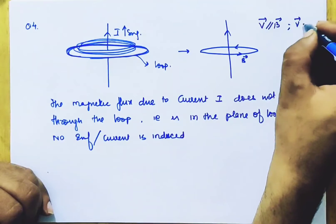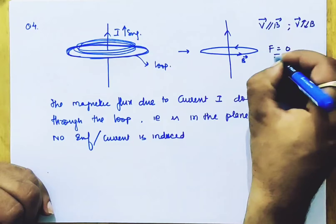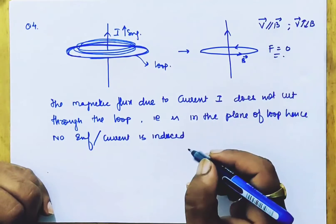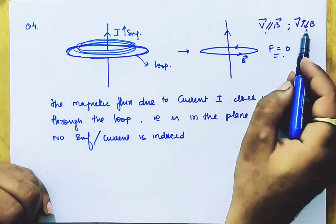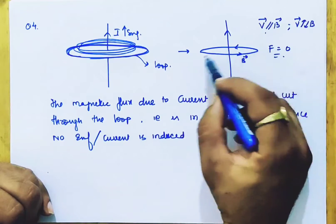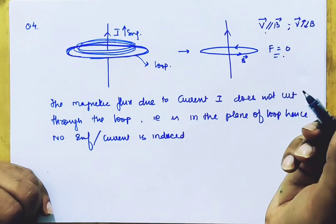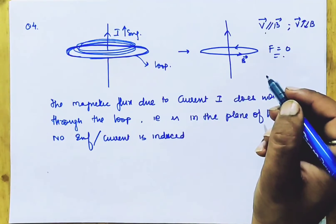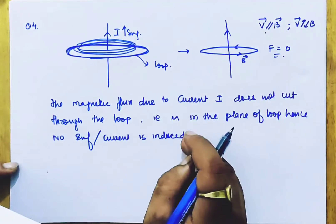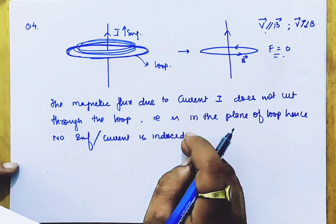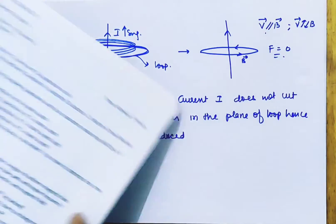We can see that the magnetic field will be parallel. This is why when the magnetic flux is in the plane of the current loop, no current is induced. Let's see the other part.